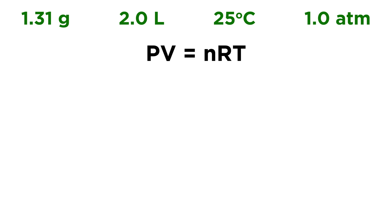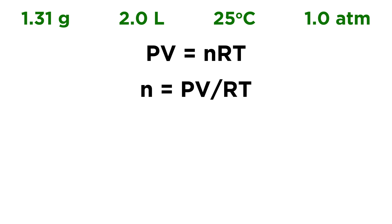So, we have our given information: 1.31 grams, 2.0 liters, 25 degrees Celsius, and 1 atmosphere. We're definitely going to need to use the ideal gas law in order to answer this question. That's PV = NRT, and if we want to identify that gas, we're probably going to need the molar mass, and molar mass is grams per mole. We have grams, but we don't have moles, so let's solve for N in the ideal gas law. N is going to be equal to PV over RT.